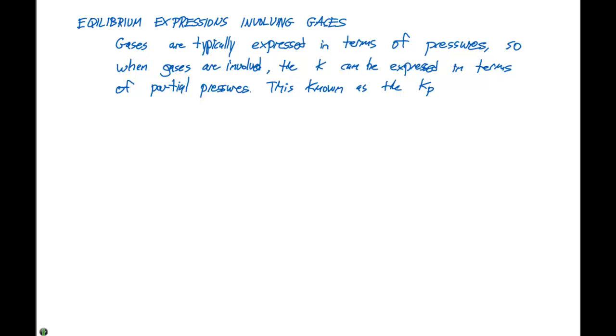So if we have a particular equilibrium expression that is 2NO gas plus Cl2 gas in equilibrium with 2NOCl gas, we can write a Kc expression for this to be the concentration of the products, which is NOCl, that quantity squared, divided by the concentration of the reactants, which would be NO squared times the concentration of Cl2.